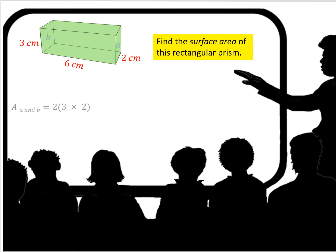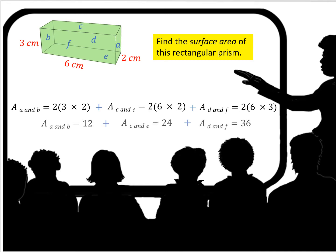To find the surface area of this rectangular prism, we're going to take the areas of each of the faces that we found. Once we do the calculations for each face, we add all those areas together and we get 72. Remember that surface area is in square units, so it becomes 72 centimeters squared.